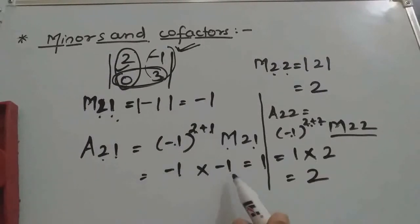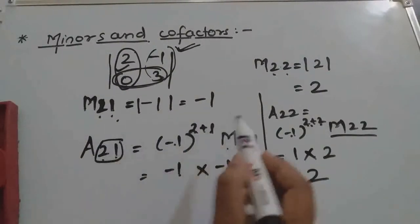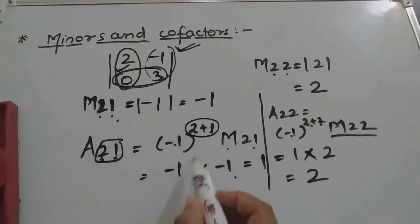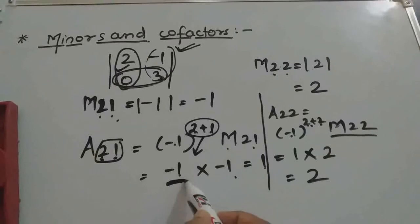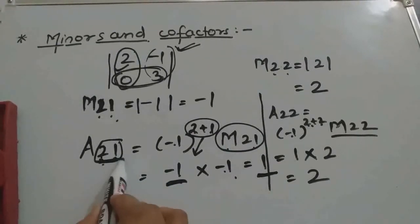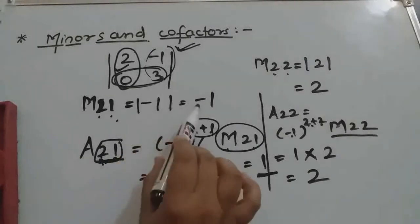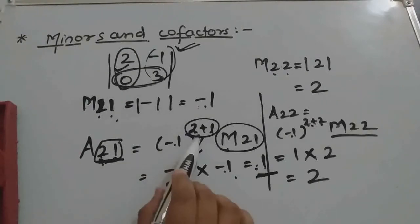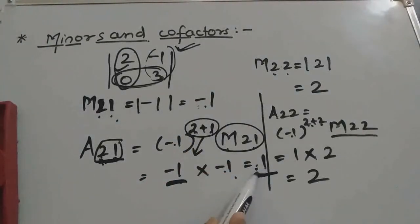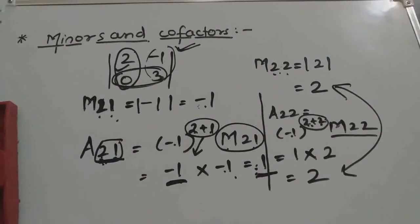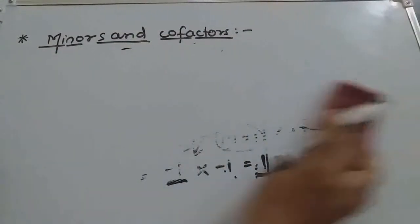One thing to observe: whenever i+j gives an odd power, your answer will be negative. And here M21 is also negative, so the answer becomes positive. A simple trick: if the power (i+j) is odd, change the sign of the minor to get the cofactor. If the power is even, the minor and cofactor will be the same. Let's take another example, this time for a 3×3 matrix.